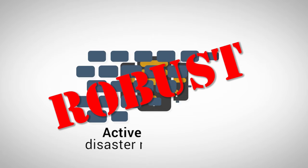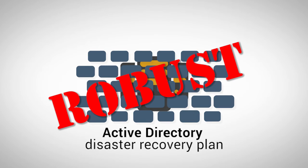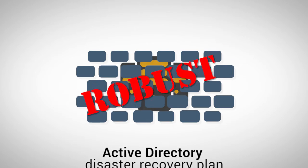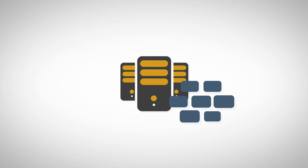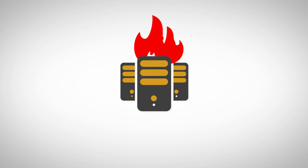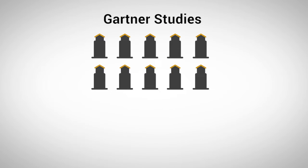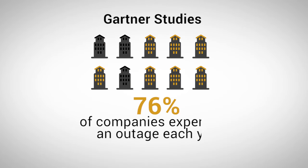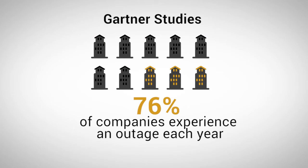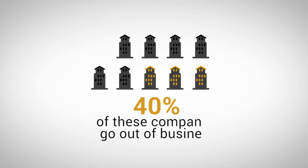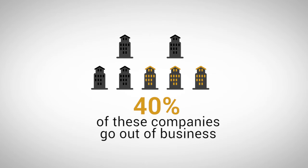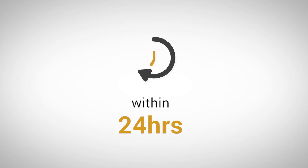If you don't have a robust Active Directory disaster recovery plan, then you are putting your business in serious jeopardy. Gartner studies have shown that 76% of companies experience an outage each year, and 40% of these companies go out of business if they cannot access their data within 24 hours.